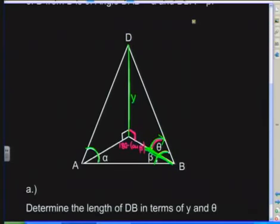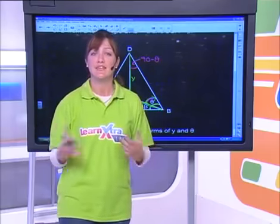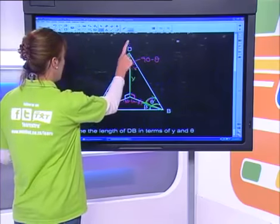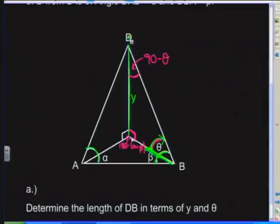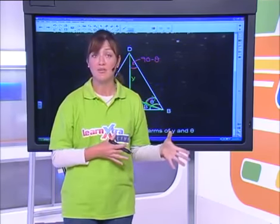Looking at triangle DB, let's call the unknown angle P. At this point I can't find any more missing angles or sides just from inspection. So we're going to take a short break — in the meantime, have a look and see if you can start piecing together the solution. Big shout-out to Group K and Princess from Ikangala Comprehensive School watching the show.